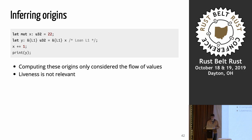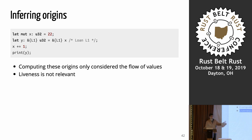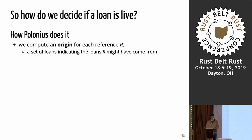Notice something: liveness — I didn't talk about liveness at all when computing the origins. When I did the inference before, I had to think about where variable y was live and that impacted the result. With Polonius, I only talk about this subtyping data-flow relationship: when you create a reference, where does it get stored to? That's all that matters for computing the origin.